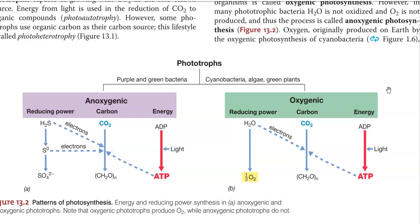When the reducing power is obtained from water — that is through splitting of water — oxygen is evolved as a result. This group of organisms is referred to as an Oxygenic Group of Organisms. They are involved in fixing carbon dioxide into cell carbon, and energy is obtained with the help of sunlight.